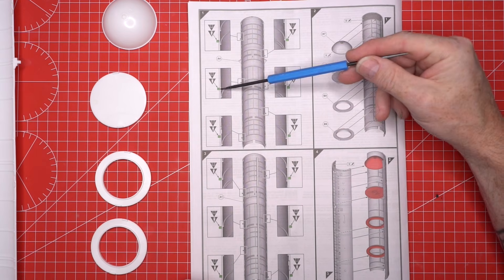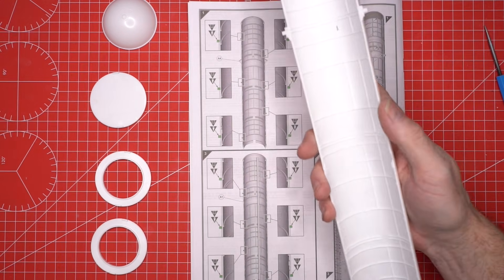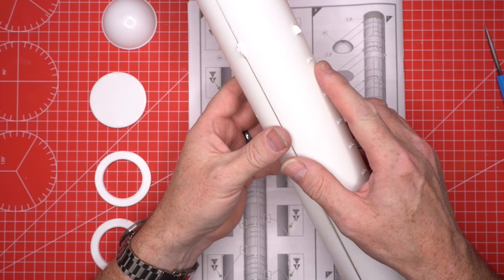First we start with the two large tube halves. Before anything meets glue, we clean the sprue tabs along the edges. A clean edge means the tube closes without gaps, so we take a moment to get that right.